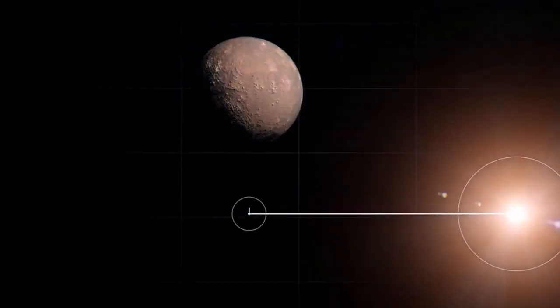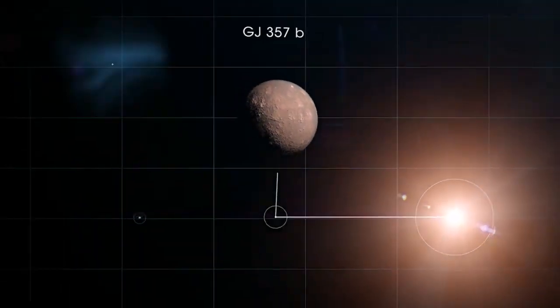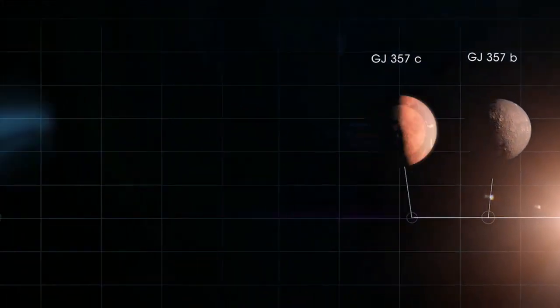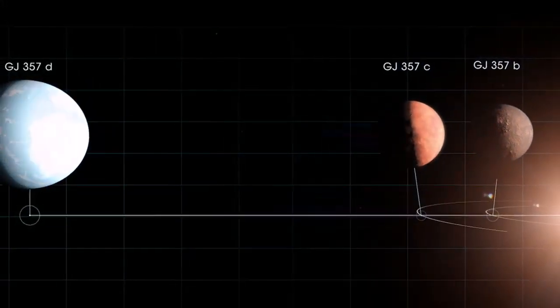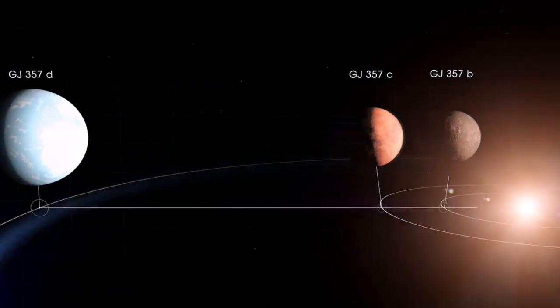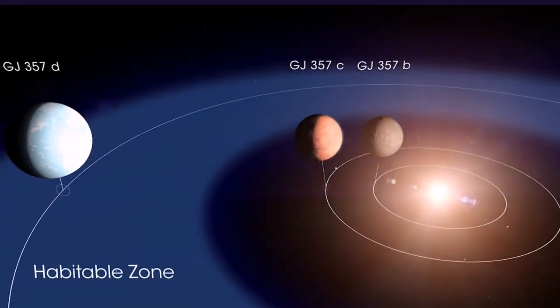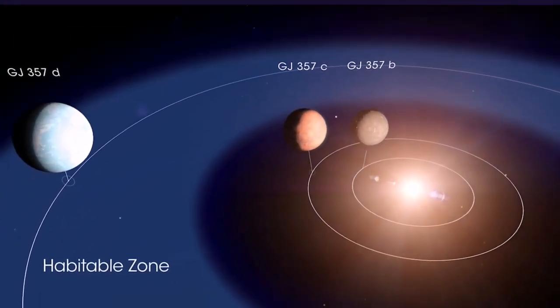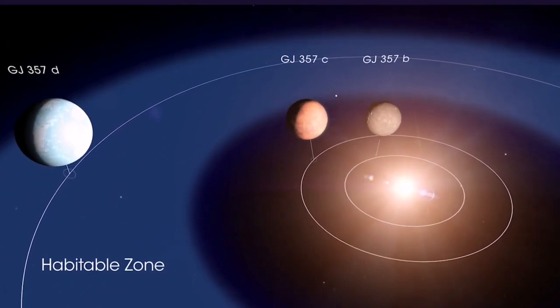TESS also found that two additional worlds are orbiting the star. The outermost planet named GJ357D got attention from scientists because it receives as much energy from its star as Mars does from the Sun.